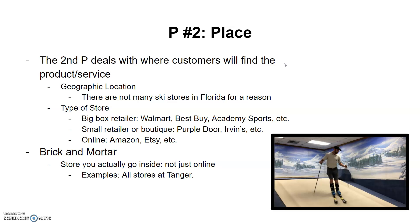The second P is place — where will the customer find the product or the service? One piece of that is geographic location, like literally where are the stores. For example, there are not many ski stores in Florida because not many people there go snow skiing. But in North Carolina or Colorado, you're going to have a lot more ski stores because people there like to ski and there's snow.